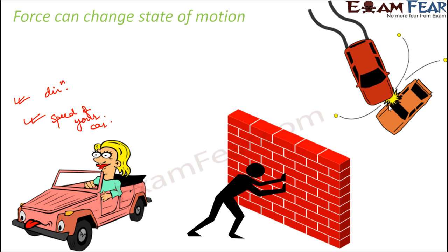If force is applied to the same wall using a bulldozer, the wall will just vanish, because the force applied by the bulldozer is very high compared to the force applied by a person. So sometimes the change brought by the applied force is not noticeable. It is not only the change of state of motion which takes place on applying force — force can also change the shape of an object.